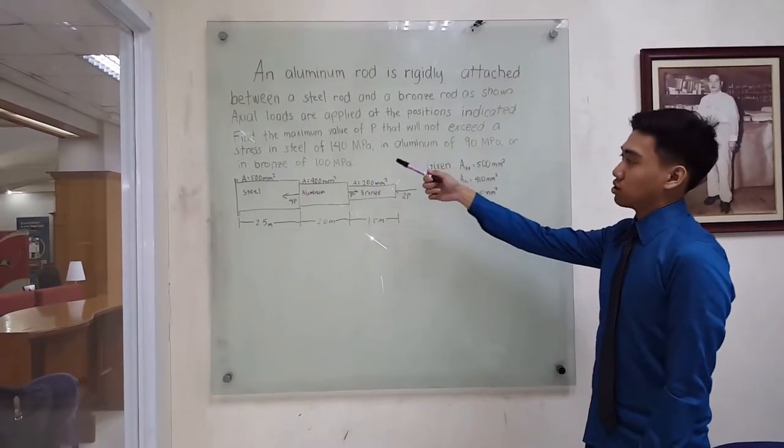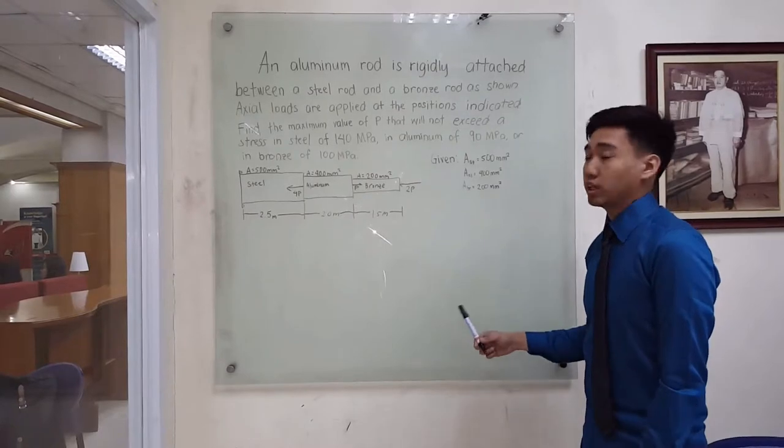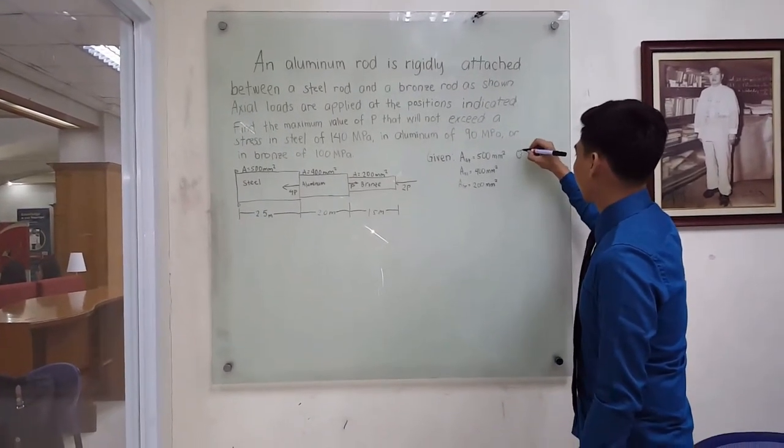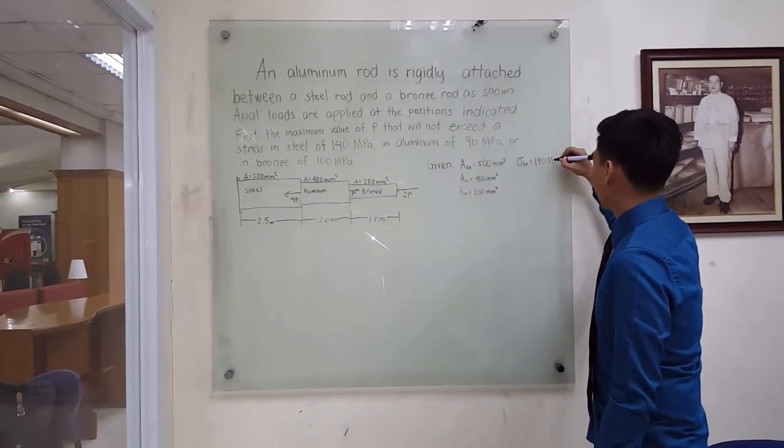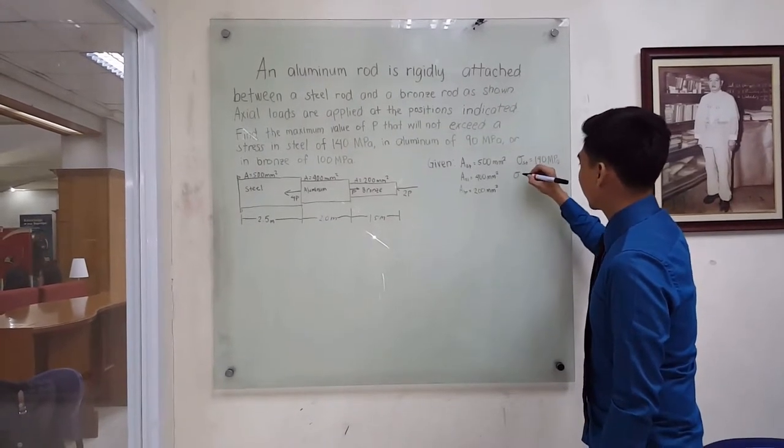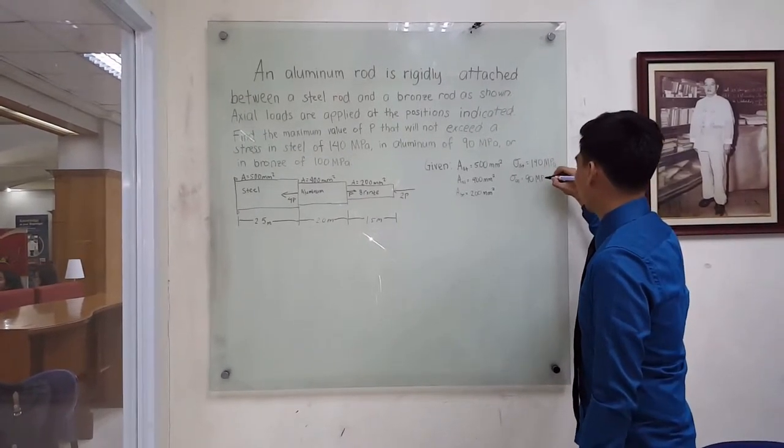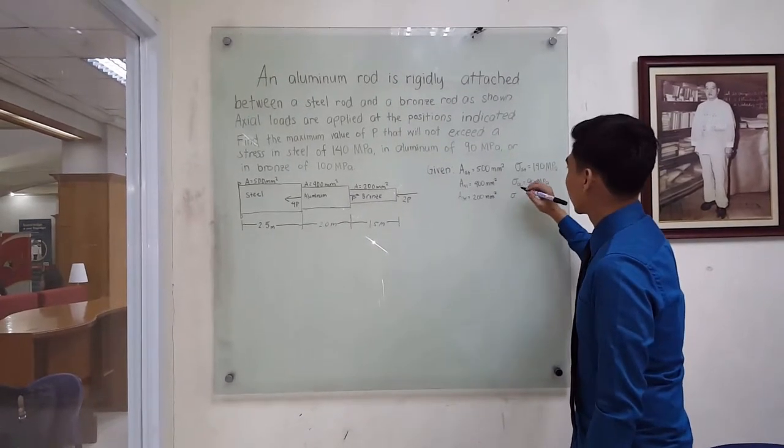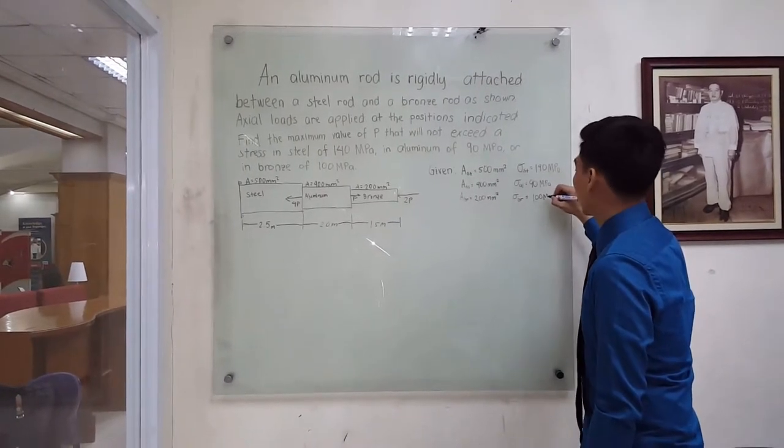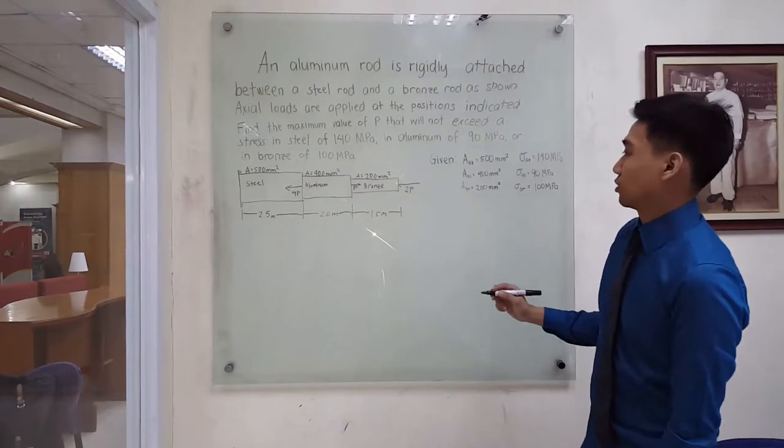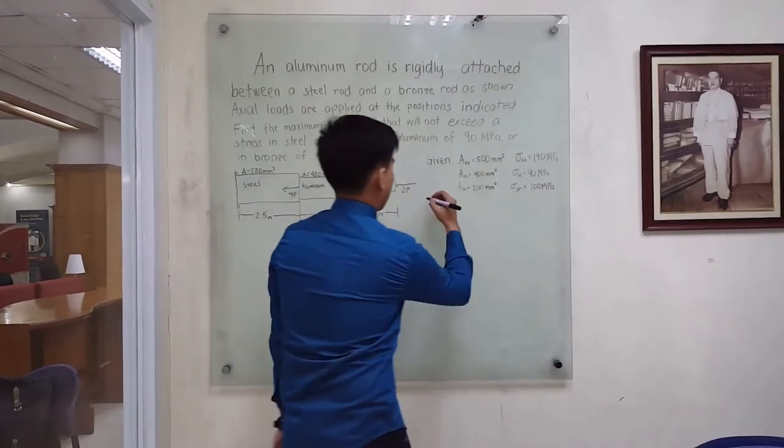The stress of steel is equal to 140 megapascals, while the stress of aluminum is equal to 90 megapascals, and the stress of bronze is equal to 100 megapascals. The required is the maximum value of P.